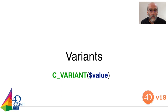The first one is the C variant. C variant is a way for you to declare your variables so that they can accept any kind of values. This possibility was until now reserved to 4D commands, but now you can have your own project method with parameters accepting any kind of values.